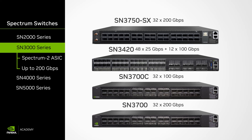The port layout on these models goes as follows. SN3750SX has 32 200 Gigabits Ethernet ports. SN3420 has 48 25 Gigabits Ethernet ports and 12 100 Gigabit Ethernet ports. SN3700C has 32 100 Gigabit Ethernet ports. SN3700 has 32 200 Gigabits Ethernet ports. As with the SN2000 series, customers that don't need the highest rate setting may enjoy the benefits of additional ports.